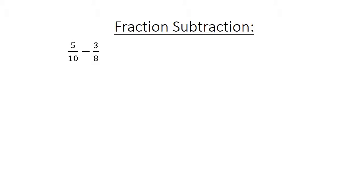Fraction subtraction: 5 over 10 minus 3 over 8. Find the lowest common multiple 40. 20 over 40 minus 15 over 40 equals 5 over 40. Simplify: 1 over 8.